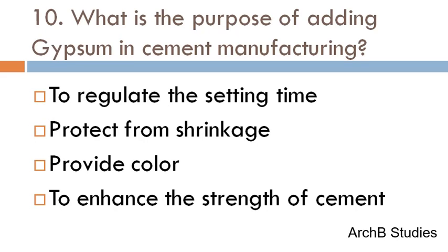What is the purpose of adding gypsum in cement manufacturing? Options: to regulate setting time, to protect from shrinkage, to provide colour, or to enhance the strength of cement? The correct answer is to regulate the setting time.